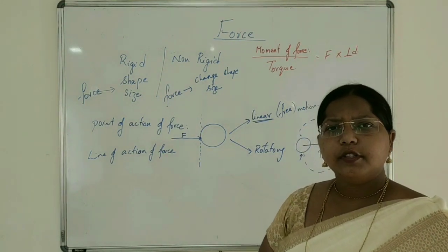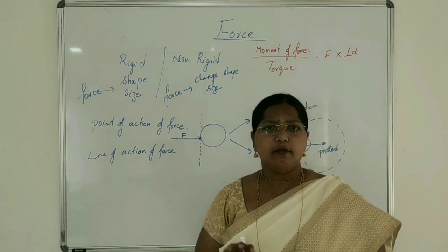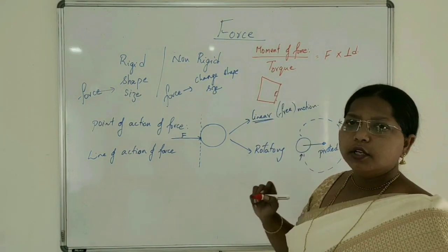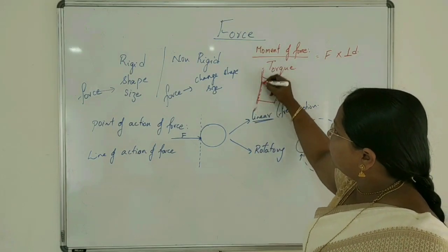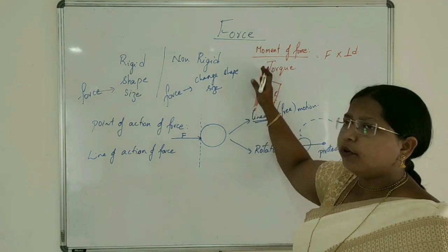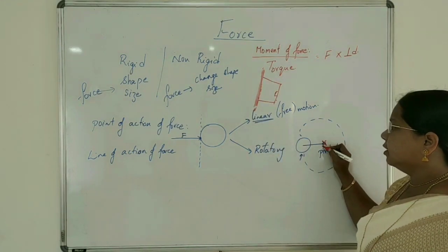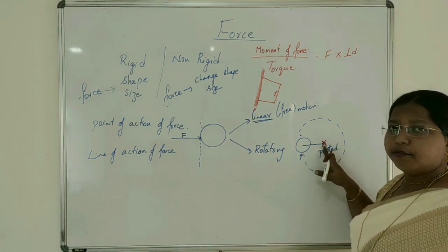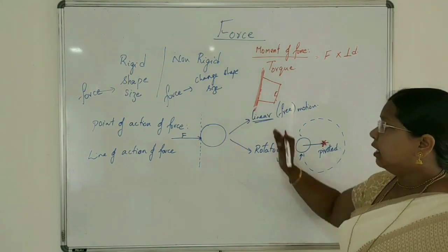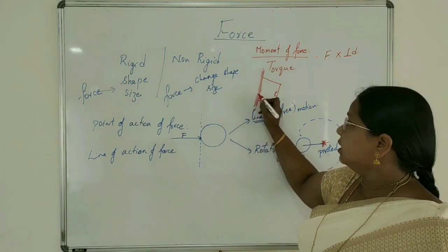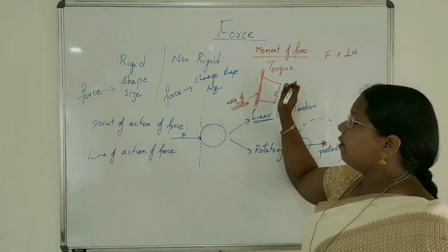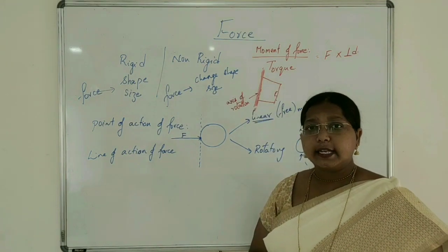Moment of force is the turning effect. Suppose there is a door I want to open — the door is already fixed at a point. This fixed point is the axis of rotation, also called the point of rotation — the point about which the body rotates. The door moves with respect to this axis, called the axis of rotation. I can open the door with respect to this line — that is the axis of rotation.